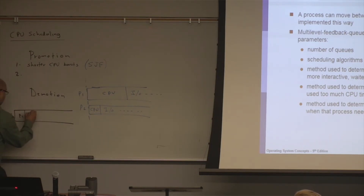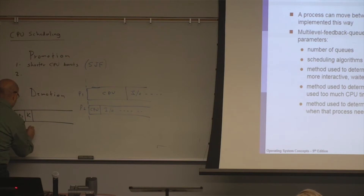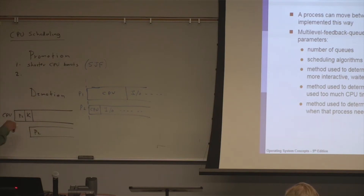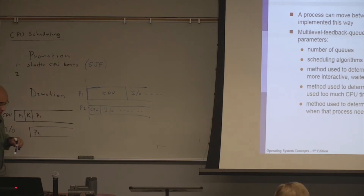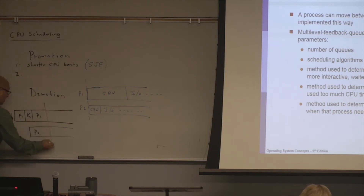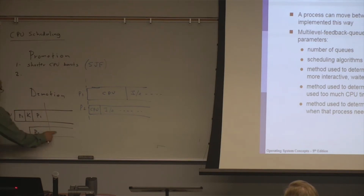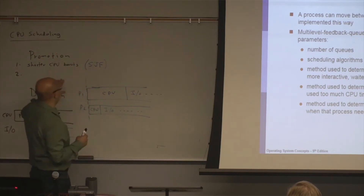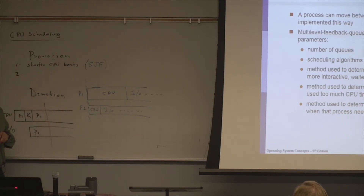P2 requests IO, so the kernel puts P2's request to IO while P2 gets serviced by IO, then gives the CPU to P1. The good thing about this schedule is that within a short period of time, two processes are making progress at the same time — P1 on the CPU and P2 on IO. That's why the system would always favor a process with a shorter CPU burst.